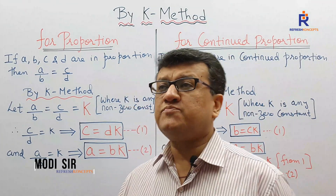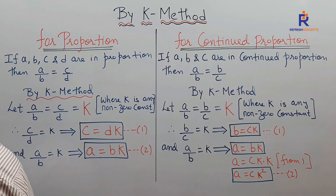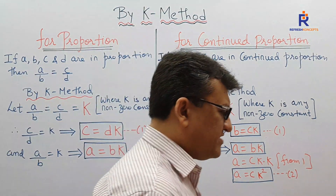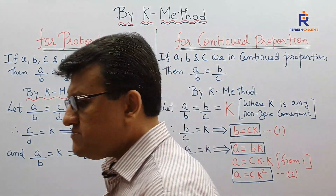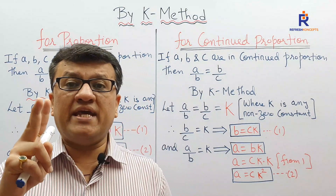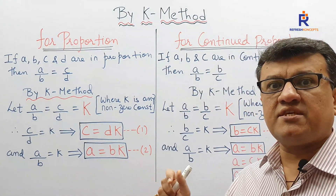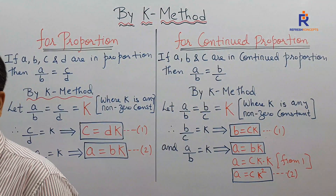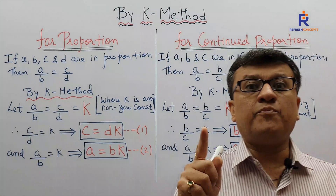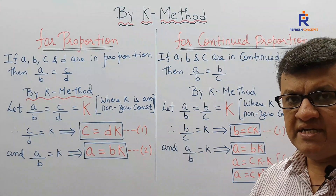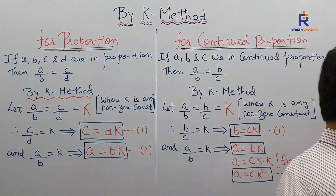Welcome back to Refresh Concepts with me Dinesh Modi. Let's move on with the K method. This particular method will be used when we go ahead to prove sums — questions where LHS and RHS are given and you are expected to prove LHS equals RHS in ratio and proportion. There are two ways to answer proof sums. One I have already stated earlier in the basic concepts of proportion; if you are not aware, please watch that slide. The second is by K method.